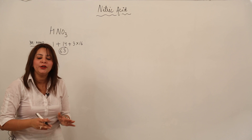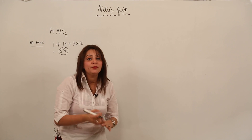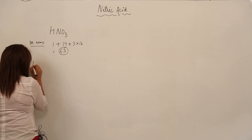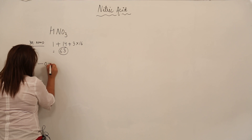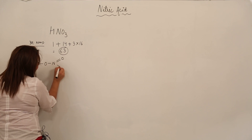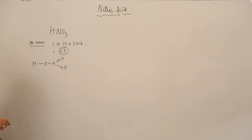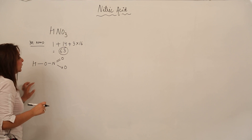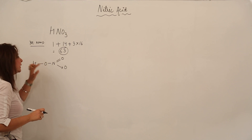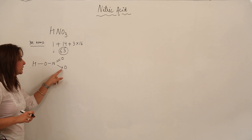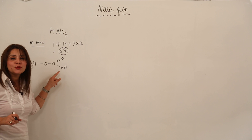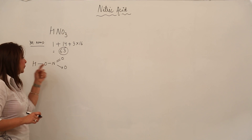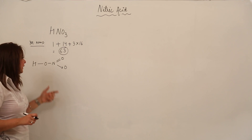The molecular mass of HNO3 is 63. Now let us look at its structure. In the structure of HNO3, there is a double bond between nitrogen and oxygen, a single bond between N and O, a single bond between O and H, and one coordinate bond. So there is one coordinate bond, one double bond, and two single bonds in this molecule.